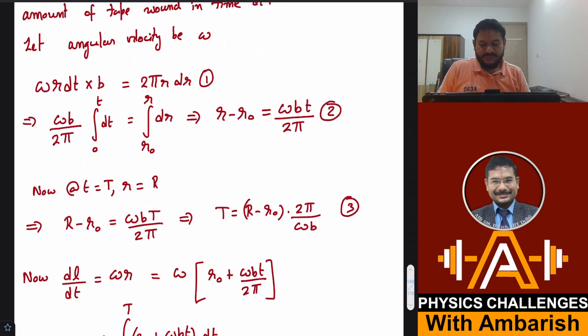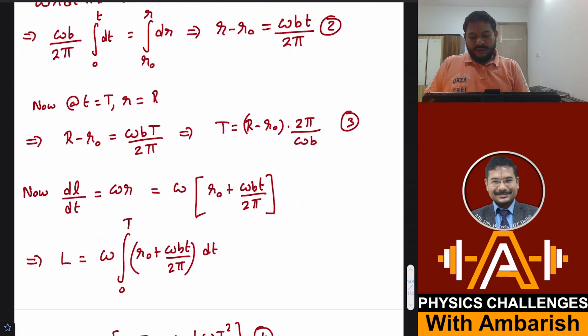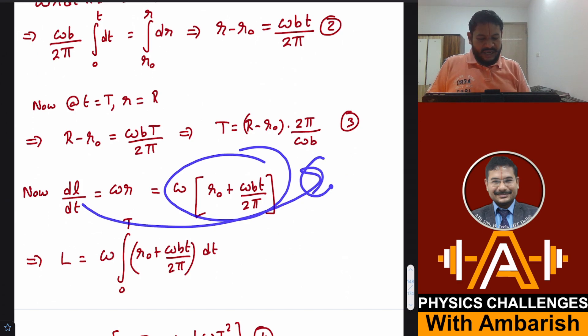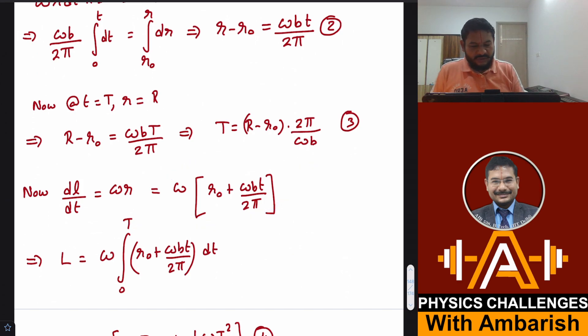Also dl by dt, the length being wound per unit time, is omega r. And r I have found as a function of time, r can be written as r0 plus omega bt upon 2π. So this is your dl by dt. The length wound at a general time t, I can just take dt over there and integrate this. That's what I have done.